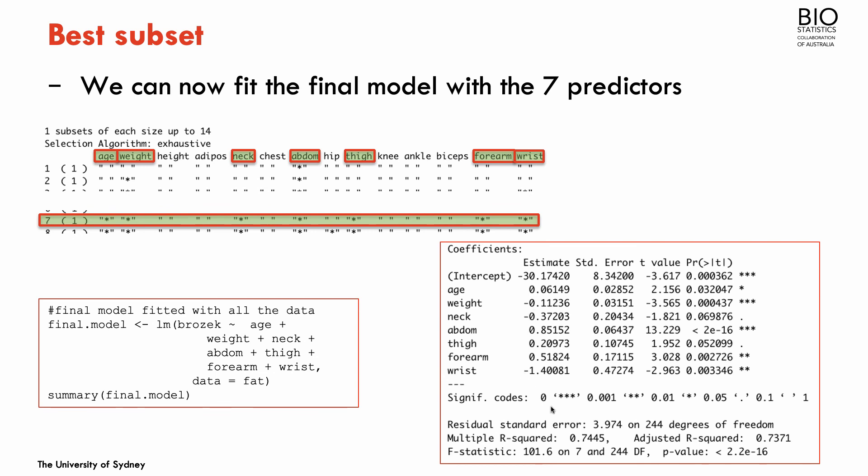So this would be one way of looking for the best model that includes searching pretty much across all the entire space of all the combinations of the predictors. But as I said, this is highly inefficient and we'll see other methods that try to deal with this problem. Thank you.